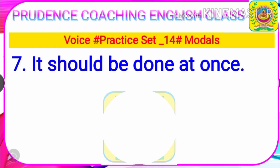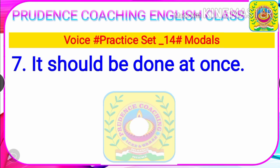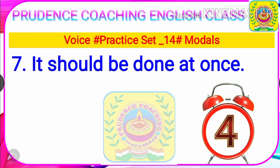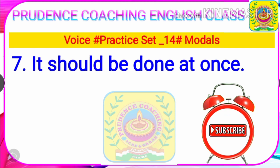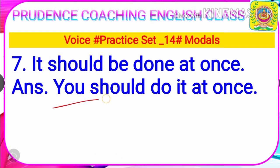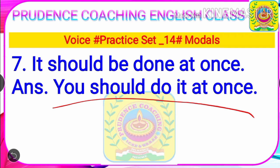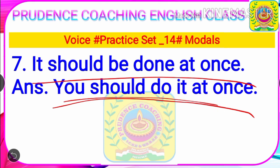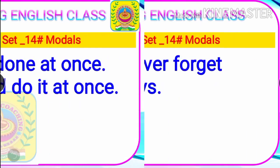The next question, number seven: 'It should be done at once.' Your time starts now. Time ends. The final answer is: 'You should do it at once.' Because the question was given in passive voice, the answer will be written in active voice. The final answer is: 'You should do it at once.' The question is passive voice and the answer is active voice.